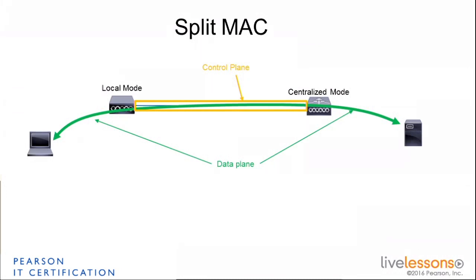This means that you will have two types of traffic between your clients and the controller, and between the controller and the access points. You will have some control traffic — that is the control plane that you see in orange here — where the controller is going to tell the AP: change your channel, you have a new SSID now, change your power, etc. What is your status? What do you hear? That's the control plane.